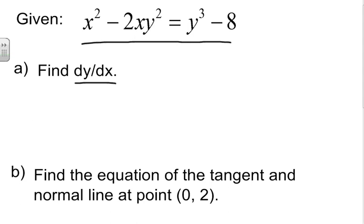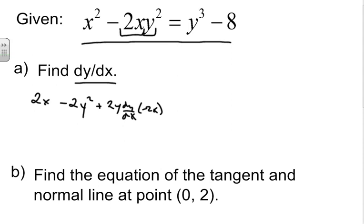First, take the derivative of x squared, which is 2x with respect to x. Next, we have negative 2x times y squared. We're going to break this into two functions to apply the product rule. The derivative of negative 2x is negative 2, times y squared, plus the derivative of y squared, which is 2y dy/dx, times negative 2x. That equals the derivative of y cubed, which is 3y squared dy/dx.